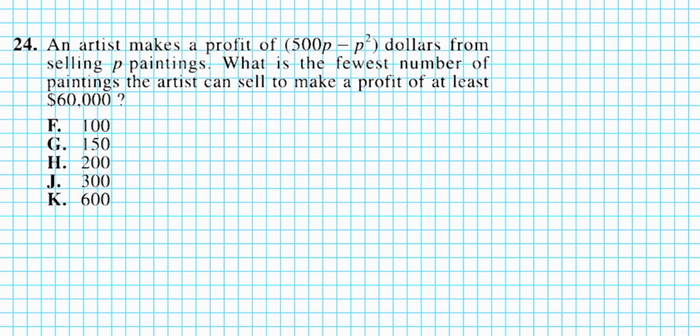Number 24. It reads: an artist makes a profit of 500p minus p squared dollars from selling p paintings. What is the fewest number of paintings that the artist can sell to make a profit of at least $60,000?